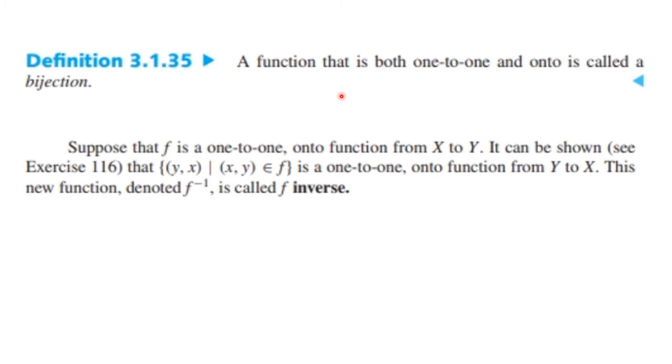A function that is both one-to-one and onto is called a bijection. If a function is one-to-one and onto, from X to Y, then there is an inverse function, f inverse, that takes you back to X. So for example, x would be mapped to y, and now we say the inverse is going to take y back to x. That is called f inverse.